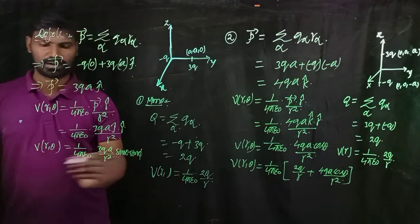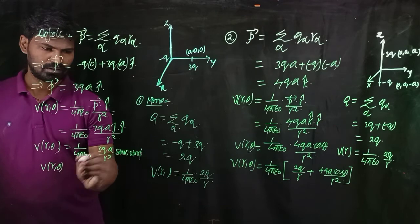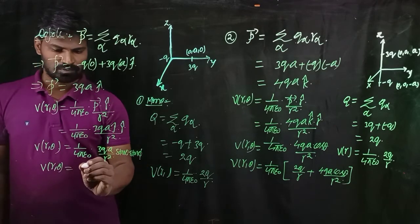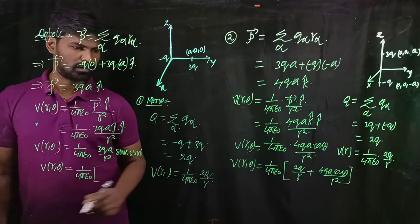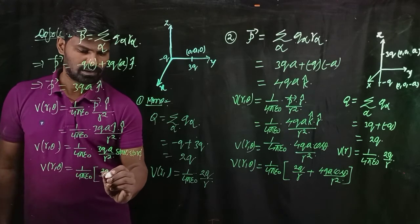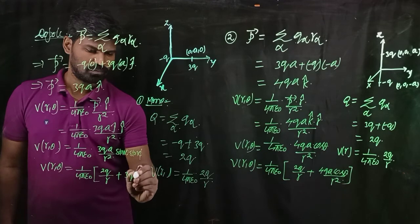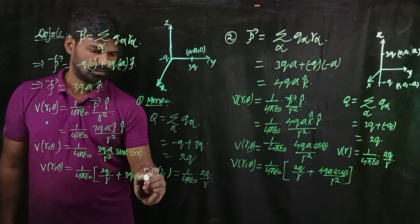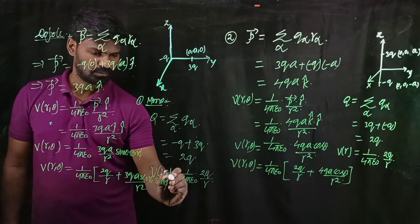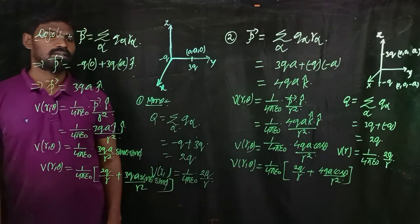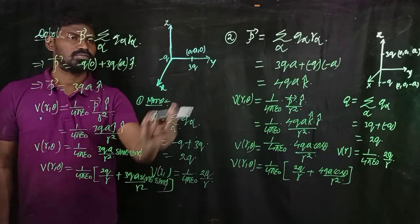Altogether, the total potential for this second configuration, which now depends on φ as well, is V(R, θ, φ) = (1/4πε₀) × [2Q/R + 3QA sin θ sin φ / R²]. This is the overall expression for the potential due to this configuration.